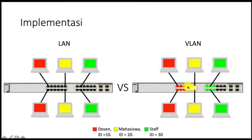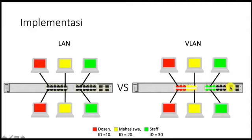Sedangkan port yang warna kuning, yaitu ada 6 port, ditandai dengan ID mahasiswa yaitu tag dengan ID 20, sedangkan yang warna hijau untuk staff ID-nya kita beri 30. Sehingga meskipun dalam fisik yang sama, di dalam switch atau layer yang sama, atau satu switch, seolah-olah ini terpisah dan tidak bisa berkomunikasi antara jaringan dosen dengan mahasiswa, atau dosen dengan staff.